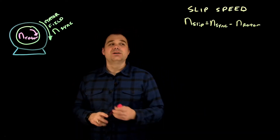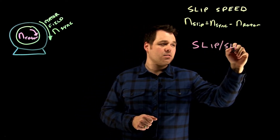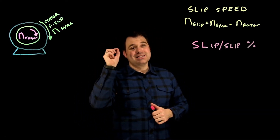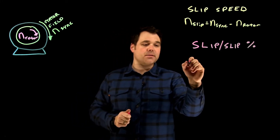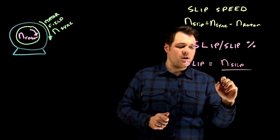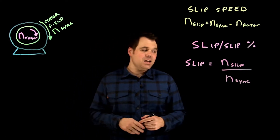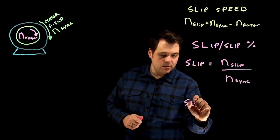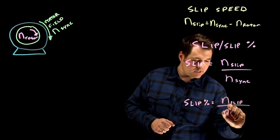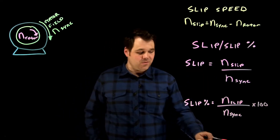That takes us to slip. Slip — or sometimes we call it slip percent — is a ratio. It's the ratio between the slip speed and the synchronous speed. So slip equals N-slip divided by N-sync — the ratio between the two — and it's always going to be a decimal. If you're looking for percentage, slip percent equals N-slip over N-sync times 100.